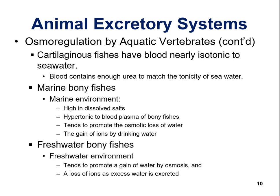The kidneys produce urine containing metabolic wastes. The concentration of urine depends on where an animal lives and how much water and salt is taken in — whether excreting ammonia, urea, or uric acid. For cartilaginous fish like sharks, blood is nearly isotonic to seawater. The blood contains enough urea to match the tonicity of seawater, meaning there's no net movement of water in one direction.